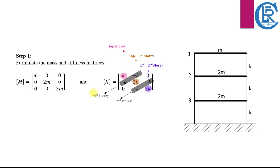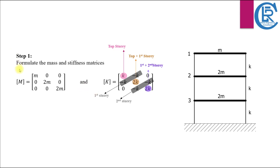Our initial step is to construct the mass and stiffness matrices. For the mass matrix, it is a straightforward process — simply input the values of the masses from the top story into the diagonal elements. All other elements in the mass matrix apart from the diagonals will be set to zero.